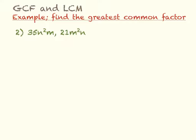For this next example we have 35n²m and 21m²n. We look at the variables they both have in common. They both have 1 n, so there's going to be 1 n in the final greatest common factor. They both have at least 1 m, so there's going to be an m in the final answer.